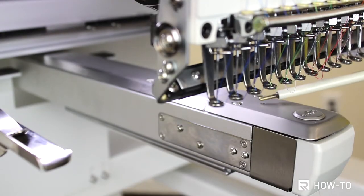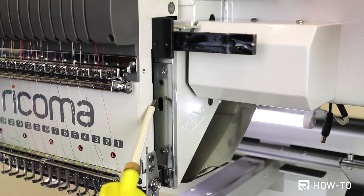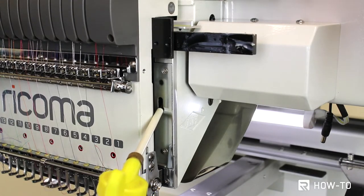Once a week, oil the opening on the needle plate. For this section, we recommend turning on the machine and setting it to needle one in order to see the opening on the right side of the machine head. Add two to three drops of oil every week to that section.